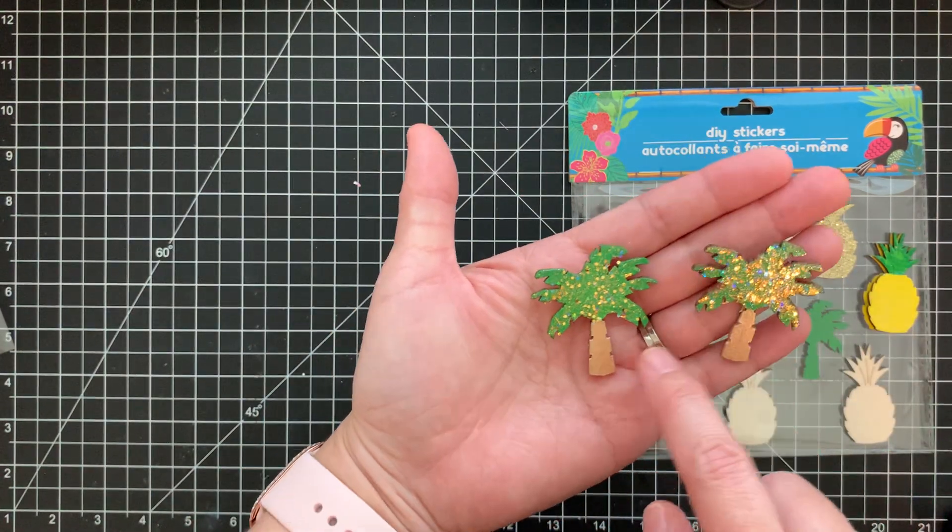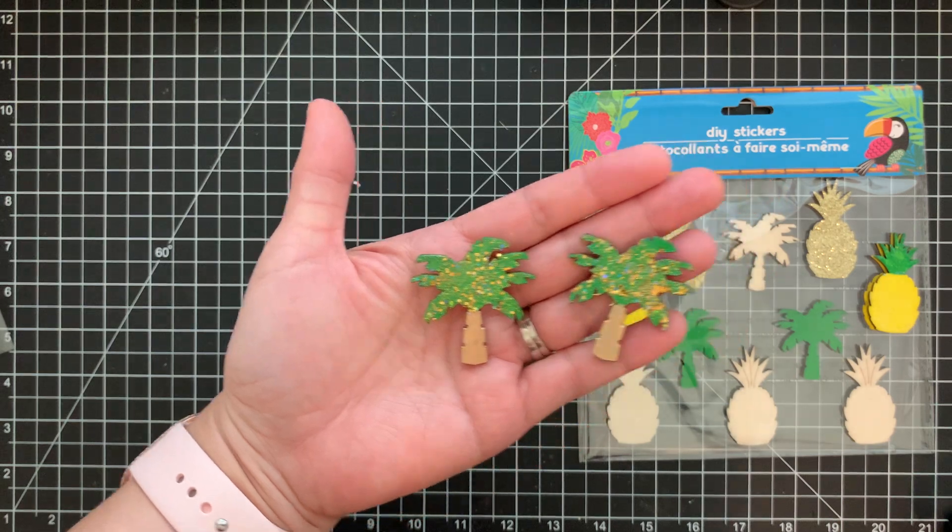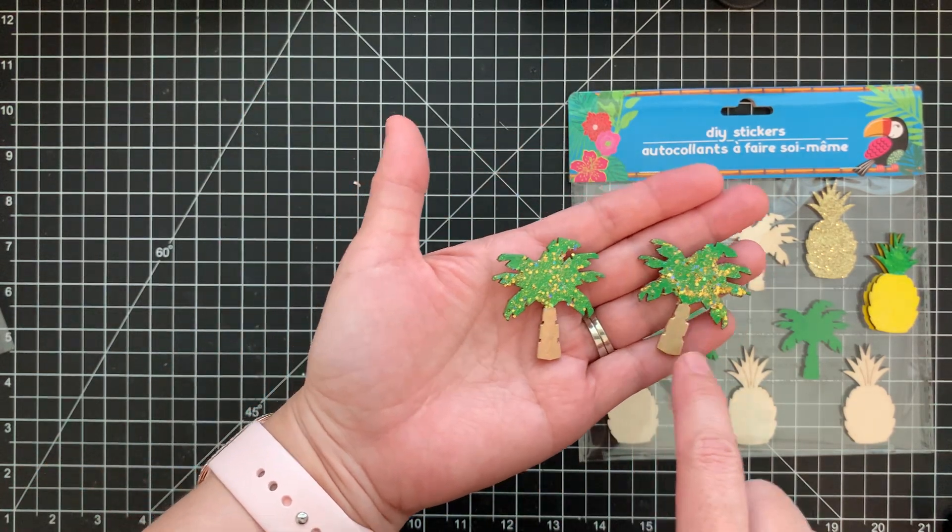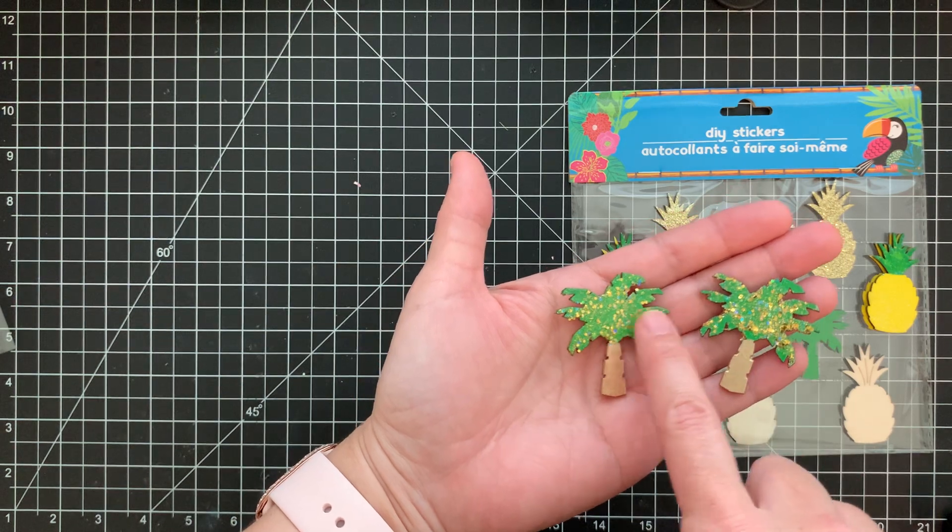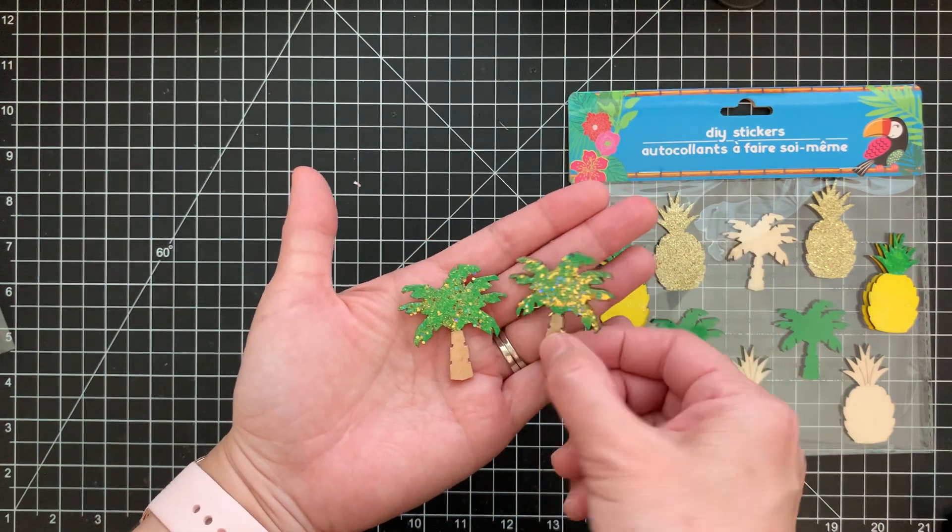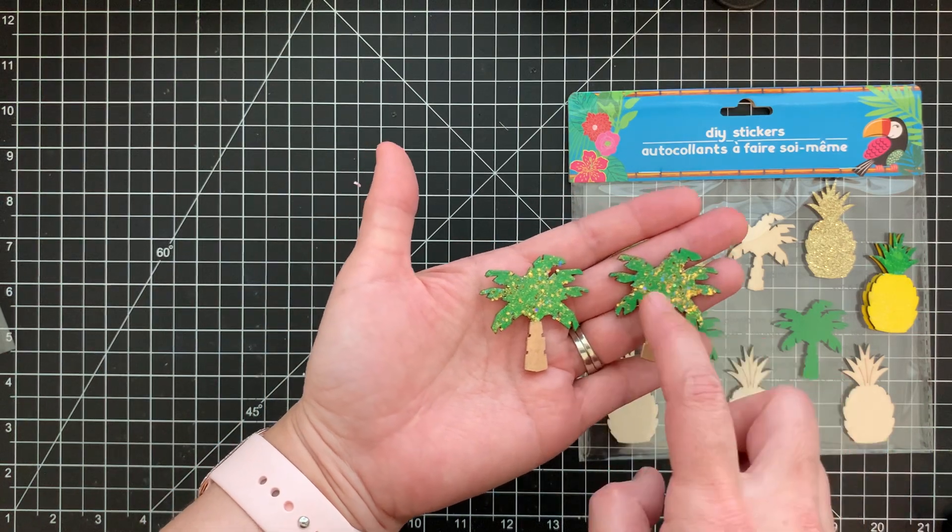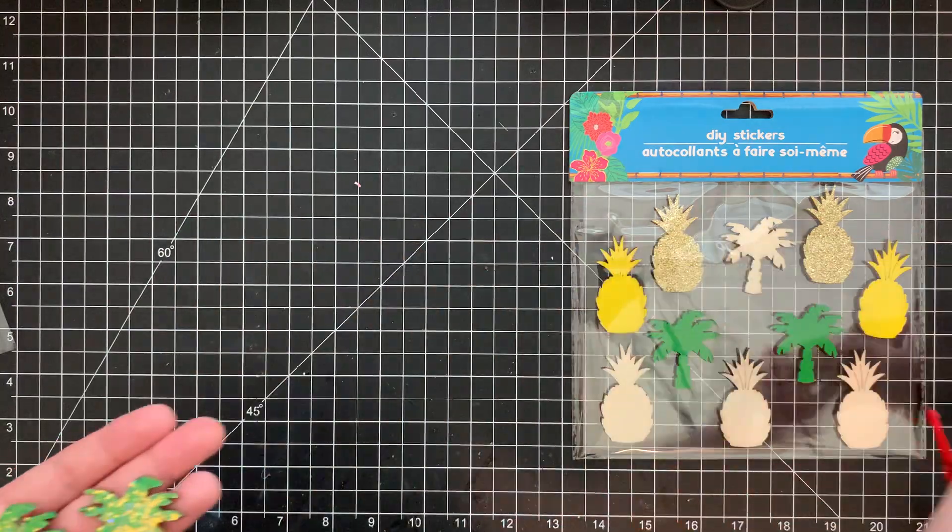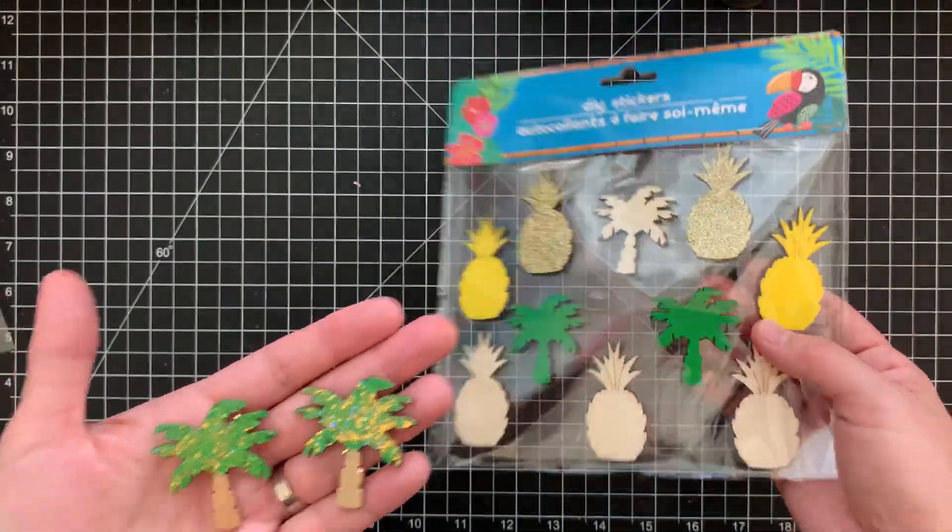So again, I use my metallic paint. It's like a metallic gold. So I use that as the tree stump. And then I went ahead and put glitter. I use my Glitterific gold glitter. And I glittered up the top of the tree because it just looks too plain.